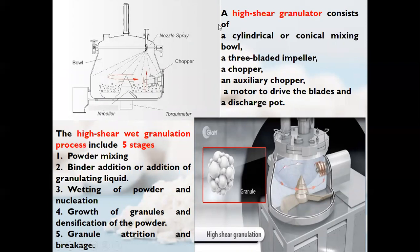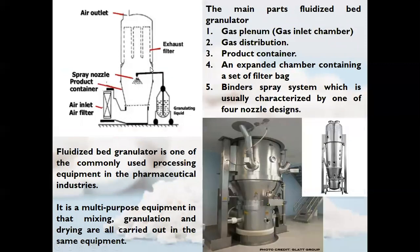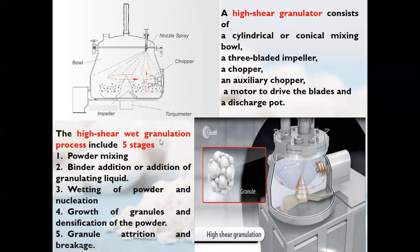Different granulators are used. A high shear granulator consists of a cylindrical or conical mixing bowl, a three-bladed impeller, a chopper which cuts the material, an auxiliary chopper, a motor to drive the blades, and a discharge port to collect the granule material. The high shear wet granulation process includes five stages: powder mixing, binder addition or addition of granulating liquid, wetting of powder and nucleation, growth of granules and densification, and granule attrition and breakage to achieve the desired size granules.